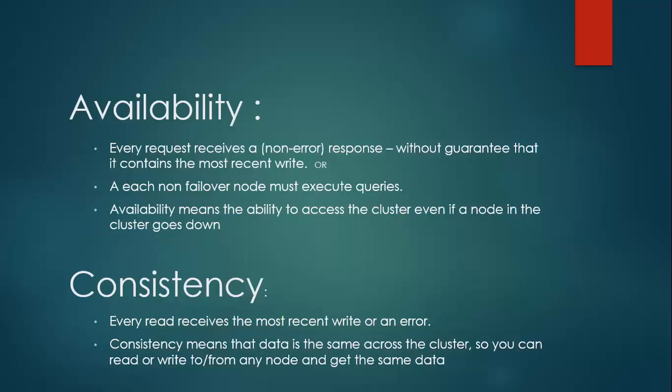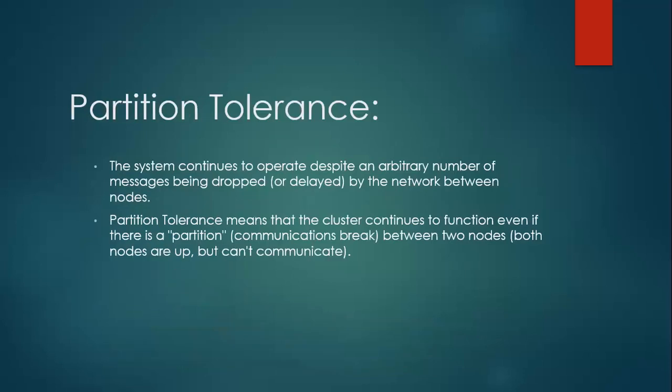The third one is partition tolerance. Partition tolerance means that even if the connections among nodes are down, the other two promises — availability and consistency — must be kept. An example of a network partition is when two nodes can't talk to each other, but there are clients able to talk to either one or both of those nodes.